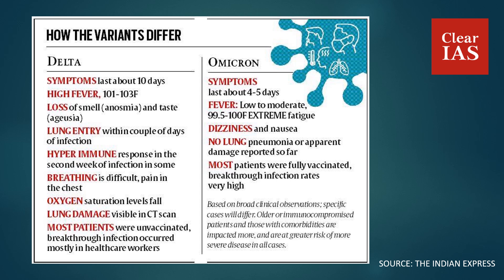The symptoms in the case of Delta were high fever, loss of smell and taste, difficulty in breathing, chest pain, and a fall in oxygen saturation levels. Whereas in the case of Omicron the symptoms are fever, dizziness and sore throat. During the second wave most patients were unvaccinated, and during the third wave — caused by Omicron — most patients were fully vaccinated and breakthrough infections were very high.